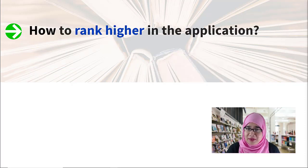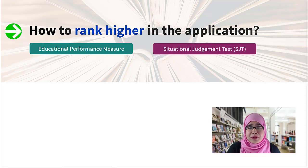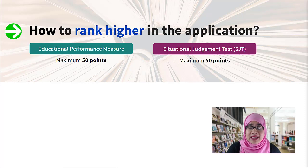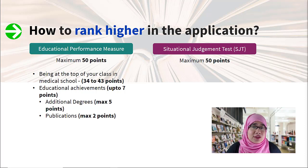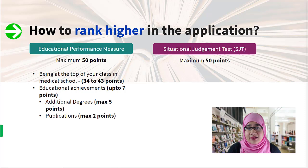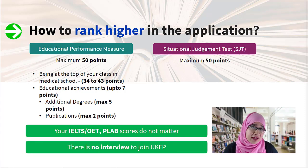Now this is probably what everyone really wants to know — how can you rank higher and make sure you get a seat? There are two basic criteria: your Educational Performance Measure (EPM) and your score from the Situational Judgment Test (SJT). The EPM is a maximum of 50 points and the SJT is also a maximum of 50 points, totaling 100. For your EPM, being at the top of your class in medical school gives you good points; educational achievements can get you up to 7 points, additional degrees up to 5 points, and PubMed-certified publications up to 2 points. Your IELTS or PLAB scores don't factor in, and there is no interview process.